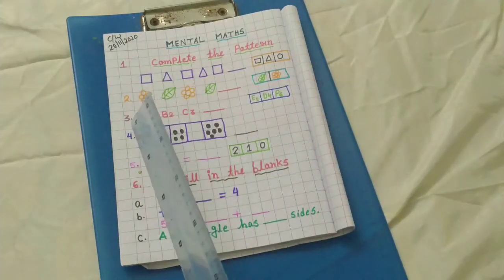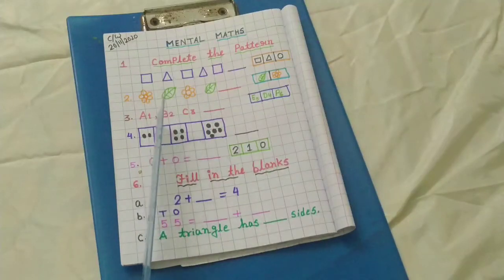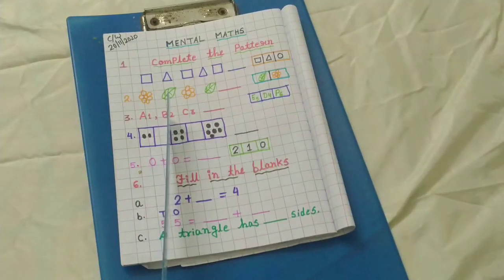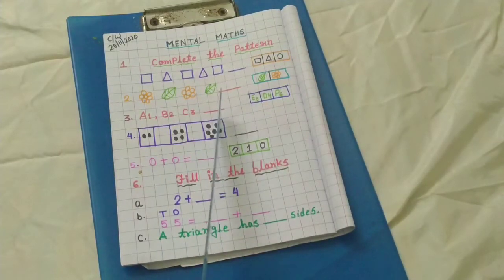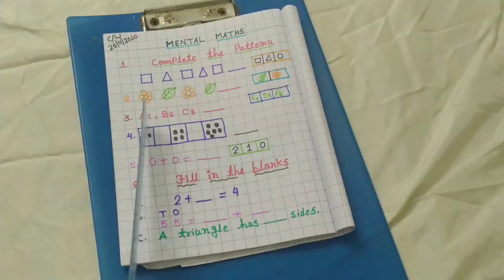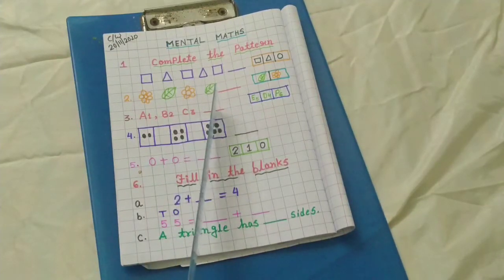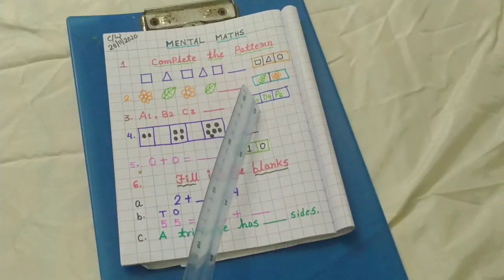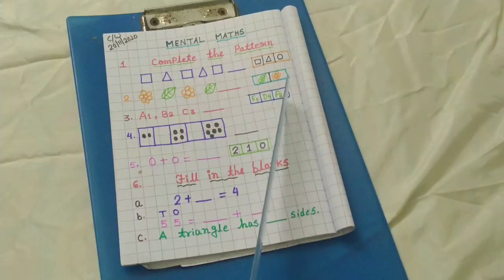Number 3. Here I have written A1, B2, C3, then one dash. A1, B2, C3 and one dash. And your options are E5, D4 and P6.